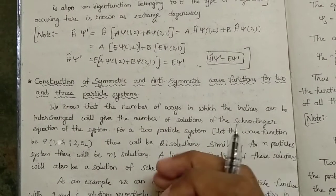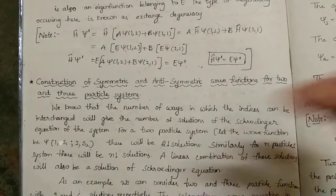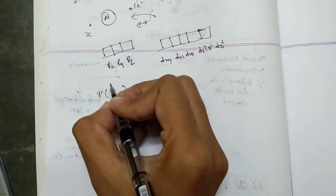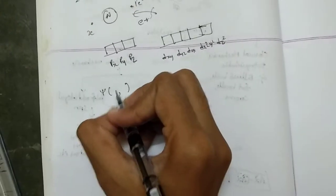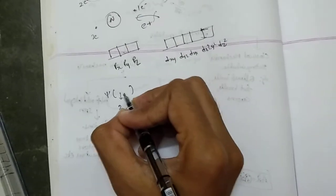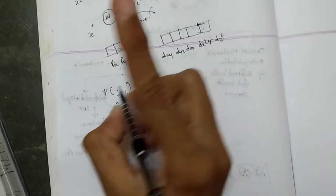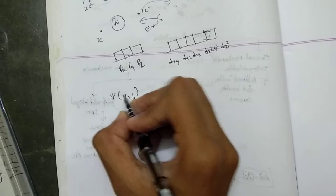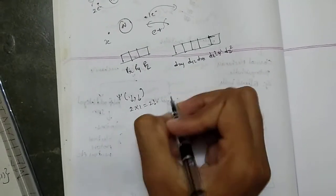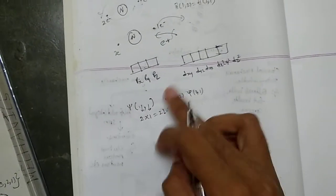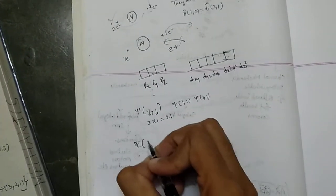Similarly, for an n-particle system there will be n factorial solutions, since n particles can be interchanged in n factorial ways. For the wave function ξ(1,2) with two particles, the first slot can be filled with 1 or 2 — two possible ways — and the next slot has only one possible way, giving two factorial ways. So ξ(1,2) and ξ(2,1) are the two factorial solutions.